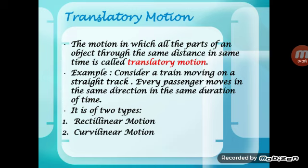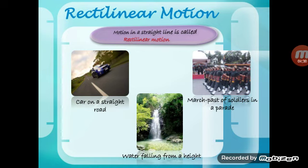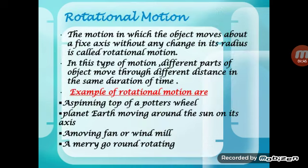If you travel in a train, every passenger moves in the same direction — that is translatory motion. Translatory motion is of two types: rectilinear and curvilinear. Rectilinear motion is motion in a straight line, and curvilinear is motion along a curved line. Examples of rectilinear motion are a car on a straight road, a waterfall falling from a height, or soldiers marching in a parade.